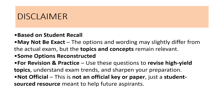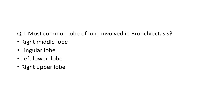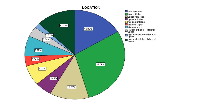Coming to the first question: the most common lobe of the lung involved in bronchiectasis. The answer is the left lower lobe. Here you can see 29.09% denoting left lower lobe, which is the most common.